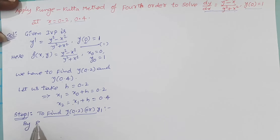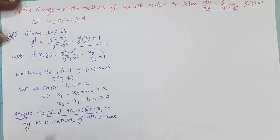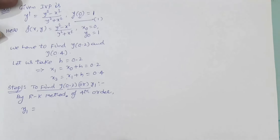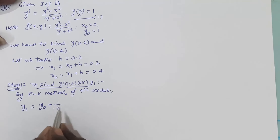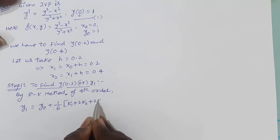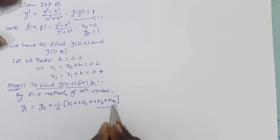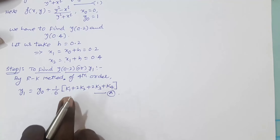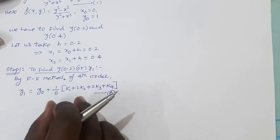By the RK method of 4th order, we have: y₁ = y₀ + (1/6)(k₁ + 2k₂ + 2k₃ + k₄). Take this as equation A. So first we have to find out the values of k₁, k₂, k₃, and k₄. After getting these values, we substitute them into this equation.